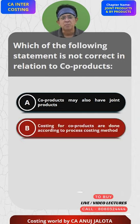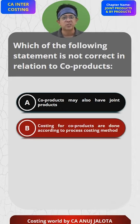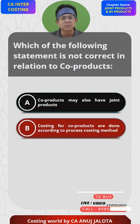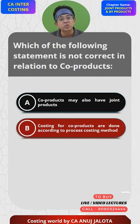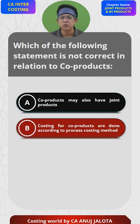Option B: Costing for co-products is done according to the process costing method. This can be done — if co-products pass through various stages of production, then process costing can be applied.